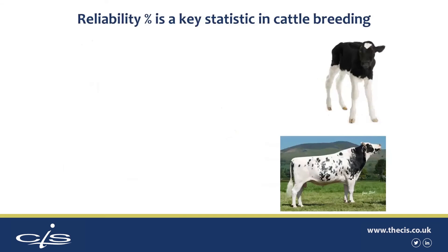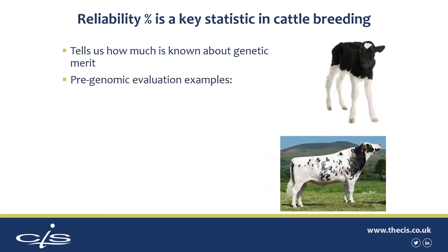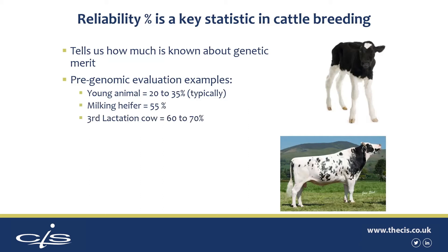One of the key statistics that's often overlooked in cattle breeding is reliability, which is quoted as a percentage. Reliability tells us about how much is known about the genetic merit of animals. Pre-genomic testing, here are some examples of reliability. Young animals typically are in the 20 to 35% range, so essentially we tend to know a third or less about their genetic merit. A milking heifer typical figure could be around 55%, so you're getting up to half of the genetic merit explained by the animal's parents and its milking information. Once cows get a bit older the reliability does increase a bit but it tends not to go much above 70%.